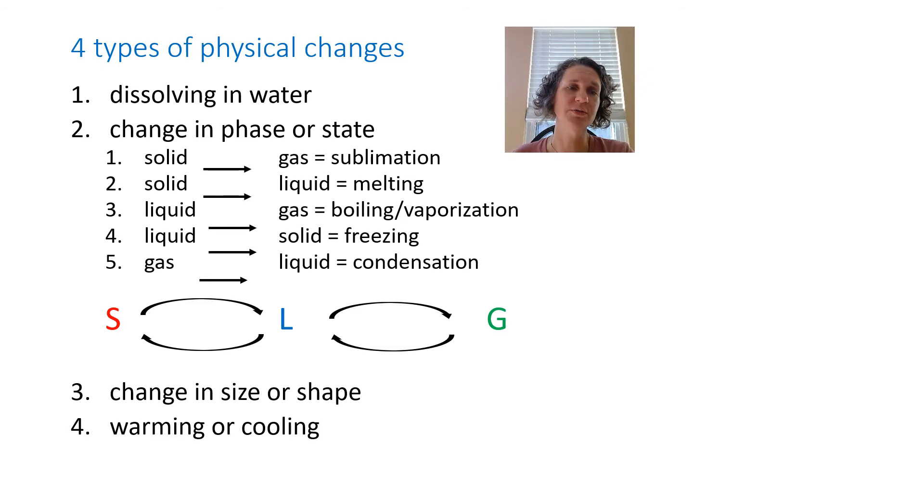With physical changes there are actually four different types. Dissolving in water we already emphasized. If I take sugar and I dissolve it in water, it's still sugar in there but now the particles are dispersed throughout the water, so I've just moved them farther apart. The change in phase or state: if you go from a solid to a liquid, oh my arrows are really messed up on there, but if you go from a solid to a gas that is sublimation. Solid to a liquid is melting. Liquid to gas is boiling or vaporization. Liquid to solid is freezing. Gas to liquid is condensation. Those again are just either moving the particles far apart or closer together.